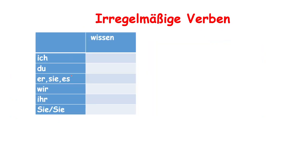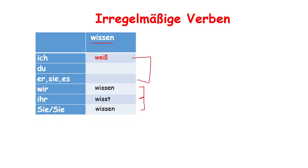Let's see one more example: wissen (to know). For wir, ihr, and sie, the conjugation is the same as in regular verbs — wissen, wisst, wissen. But for ich, we have weiß. For du, we also have weißt, and for er/sie/es, weiß. So ich and er forms are the same here.